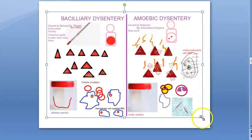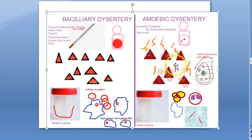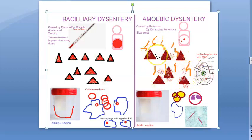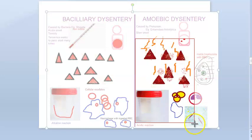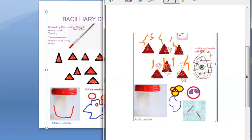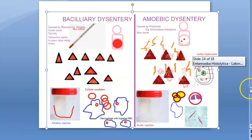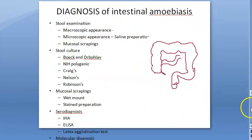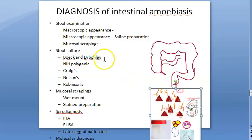In amoebic dysentery, the stools will be copious — mainly feces with little blood and mucus streaked through. They will be foul smelling with a high volume of stool but lower frequency. This is the macroscopic picture, and importantly, the stool will not stick to the container.